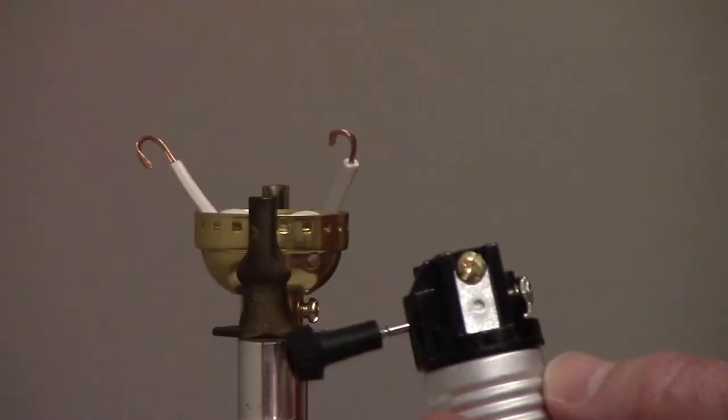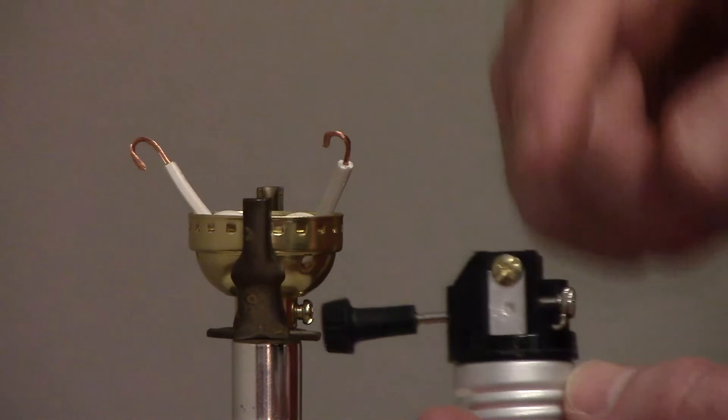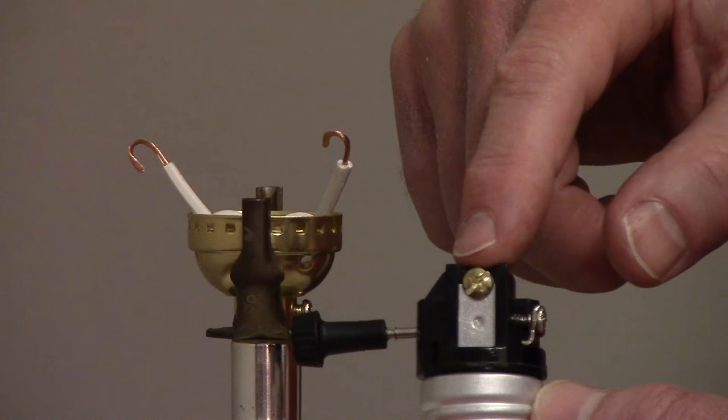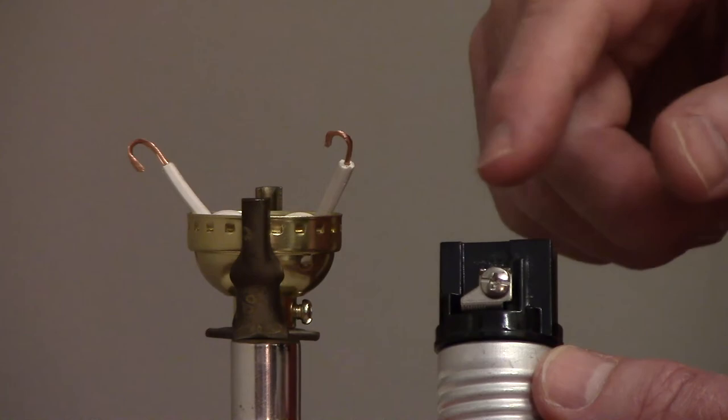On your lamp socket, you're going to have a brass screw terminal and a silver screw terminal. You're going to connect the hot wire, the wire with the smooth insulation, to the brass screw terminal and the neutral wire, the wire with the ribbed insulation, to the silver screw terminal.